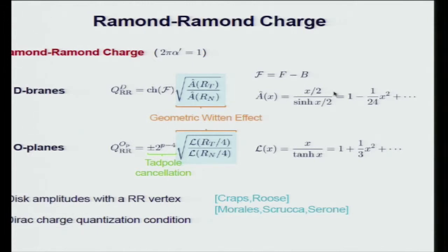We can do a similar thing for the Ramond-Ramond charge of the orientifold plane from anomaly inflow, which involves the Hirzebruch class. The first term is very important for the tadpole cancellation. Furthermore, by computing the disk amplitude with the Ramond-Ramond vertex, people confirmed the first few terms in those two expressions, and these two expressions are consistent with the Dirac charge quantization conditions, so everything fits together.